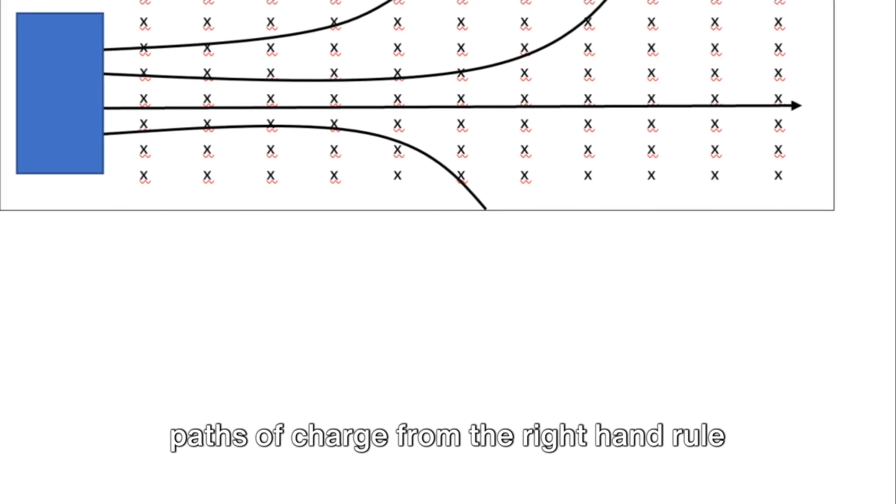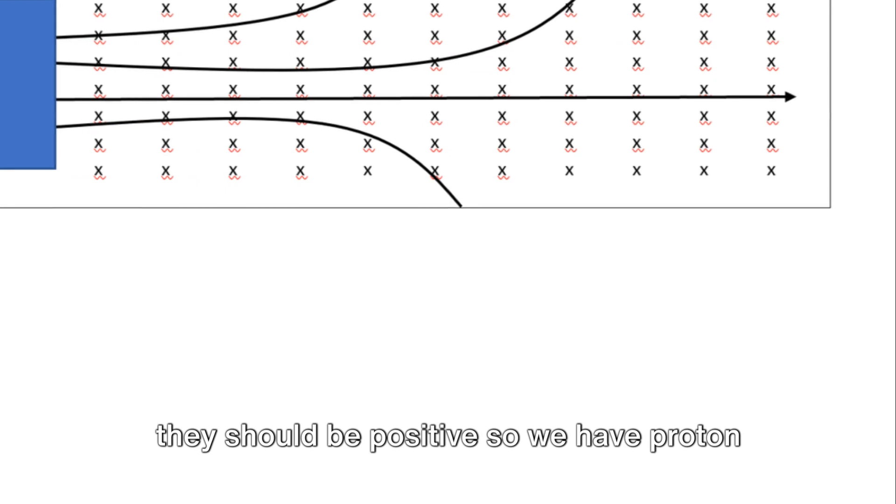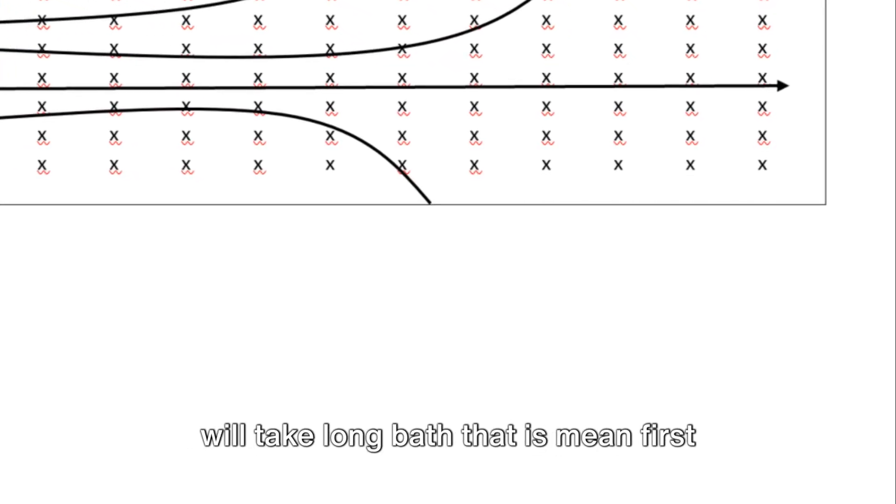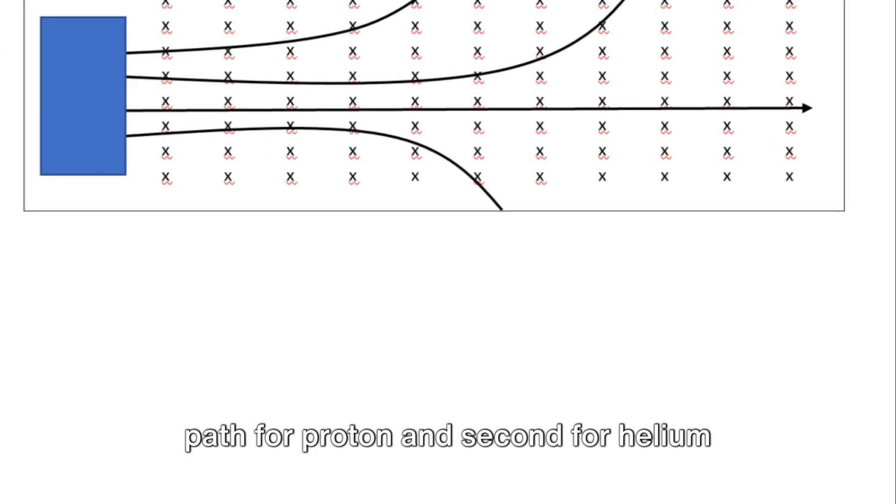So from the top there are two paths of charge. From the right hand rule, they should be positive, so we have proton and nucleus of helium. But the helium nucleus is heavier than the proton, so it will take a longer path. That means first path for proton, and second for helium nucleus.